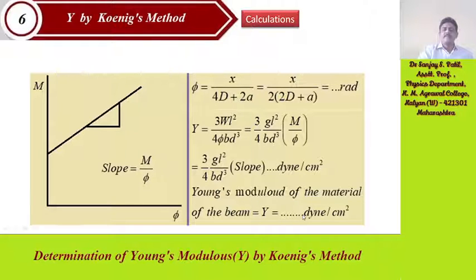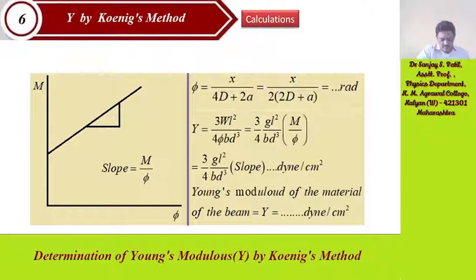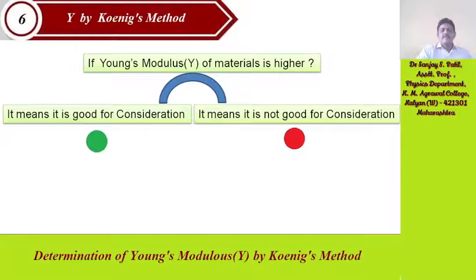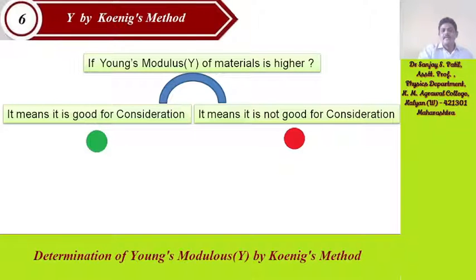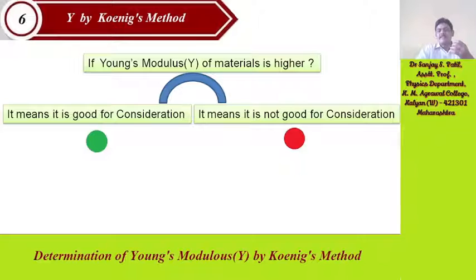This is about the determination of Young's modulus by Koenig's method. The answer is: if Young's modulus of a material is higher, it means it is good for consideration; if it is less, it is not good. Young's modulus is the measure of stiffness and strength of the material — how strong and stiff that material is.